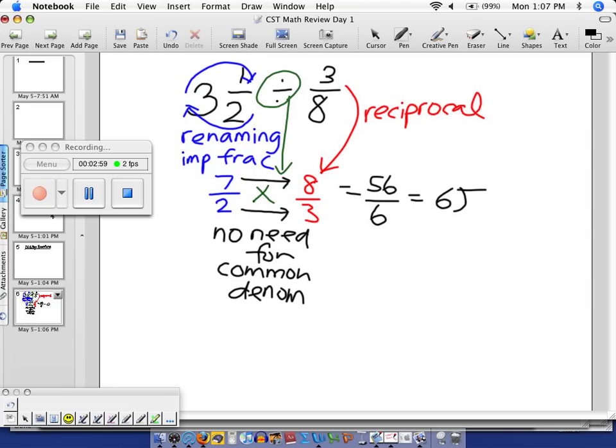How many 6's are there in 56? 9 times 6 is 54. My remainder is 2.